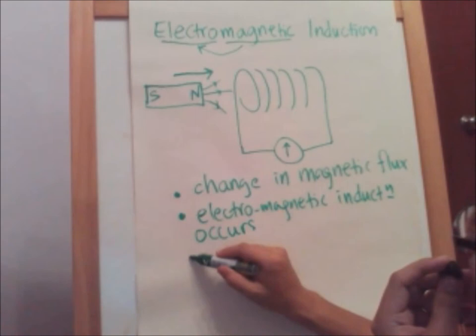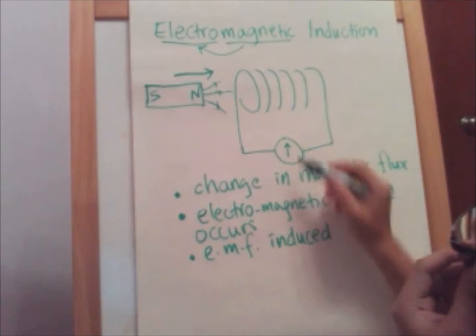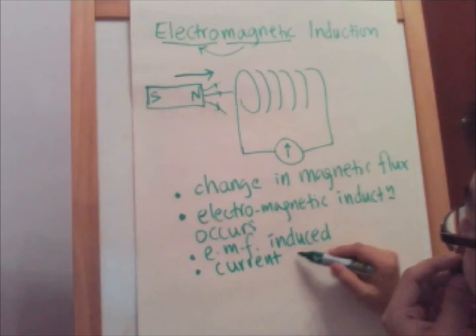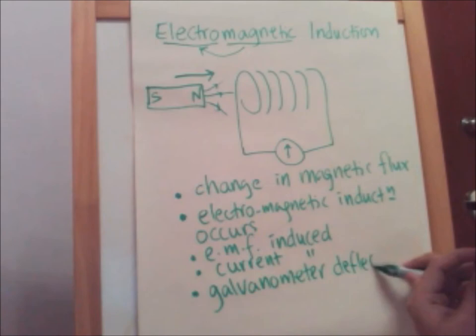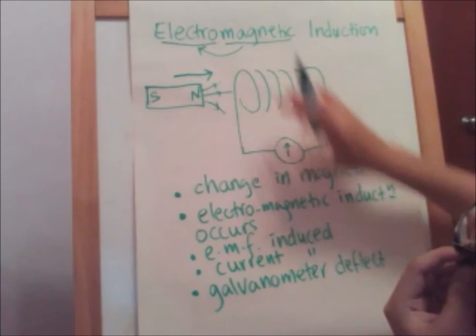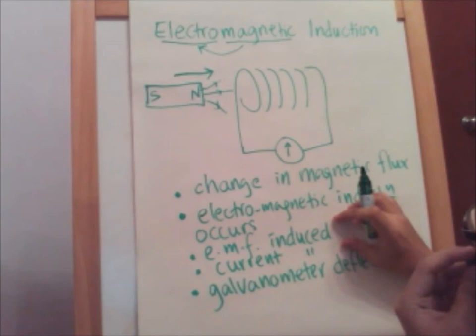What will be induced is EMF — which is like a voltage. If EMF is induced and if it is a complete circuit, current will also be induced. Since EMF is like voltage, the galvanometer will deflect momentarily. When the magnet is pushed in, there is a change of magnetic flux as the field lines cut the coil, so electromagnetic induction occurs, EMF is induced, current flows, and the galvanometer deflects.